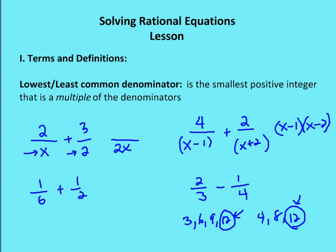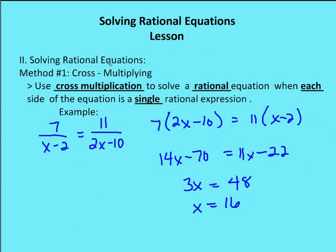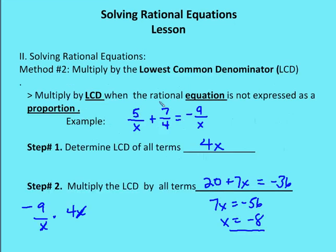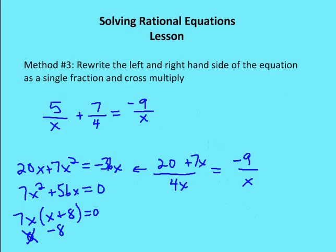To summarize the three methods: Method one — cross multiplication — applies when there is a single rational expression on each side of the equal sign. Method two — multiply each term by the lowest common denominator, simplify, and solve for x. Method three — simplify multiple fractions into one expression on each side of the equation, then use cross multiplication.